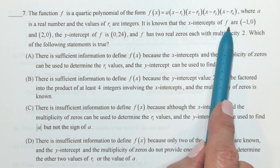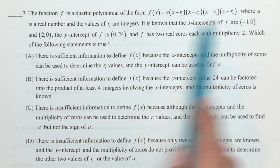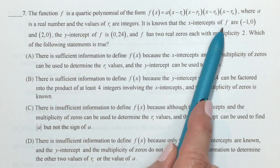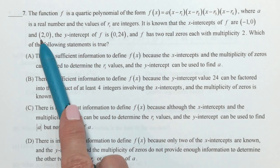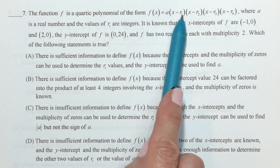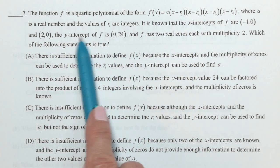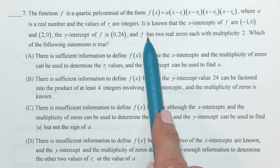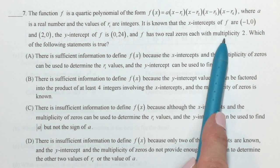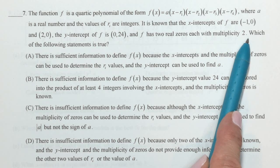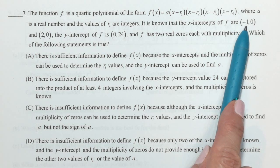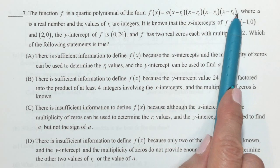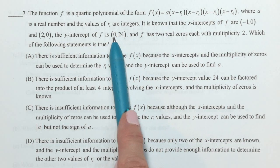The function f is a quartic polynomial of the form, and they give me the form of this polynomial, where a is a real number, and the values of r sub i are integers. It is known that the x-intercepts of f are negative 1, 0, and 2, 0. I already know two of the r values then. That means that this is a double, and this is a double.